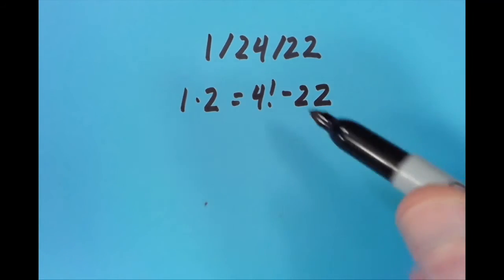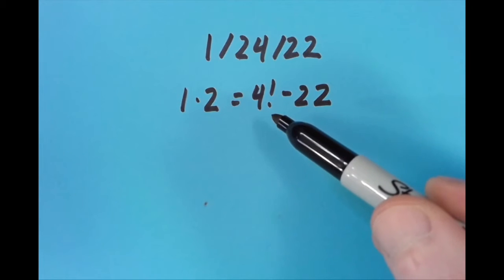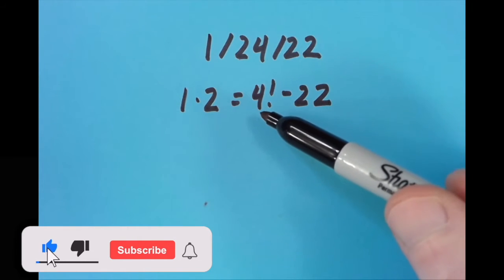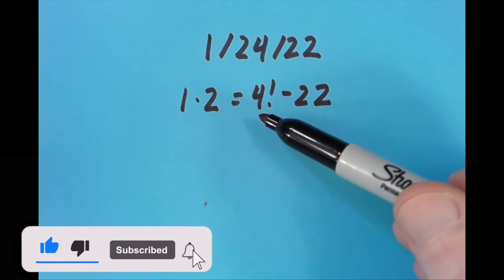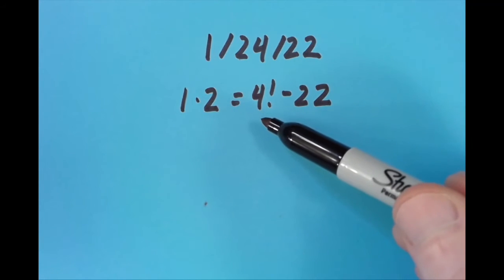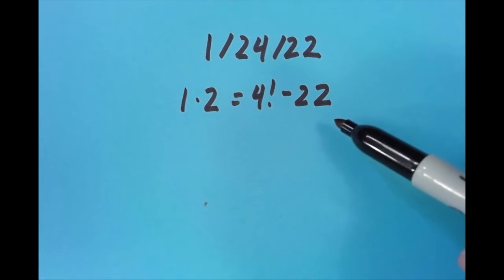The factorial—I did a video on January 13th explaining this if you want to watch that—but the factorial basically means to multiply this number times every number all the way down to 1, so this would be 4 times 3 times 2 times 1, which gives us 24, and 24 minus 22 is 2.